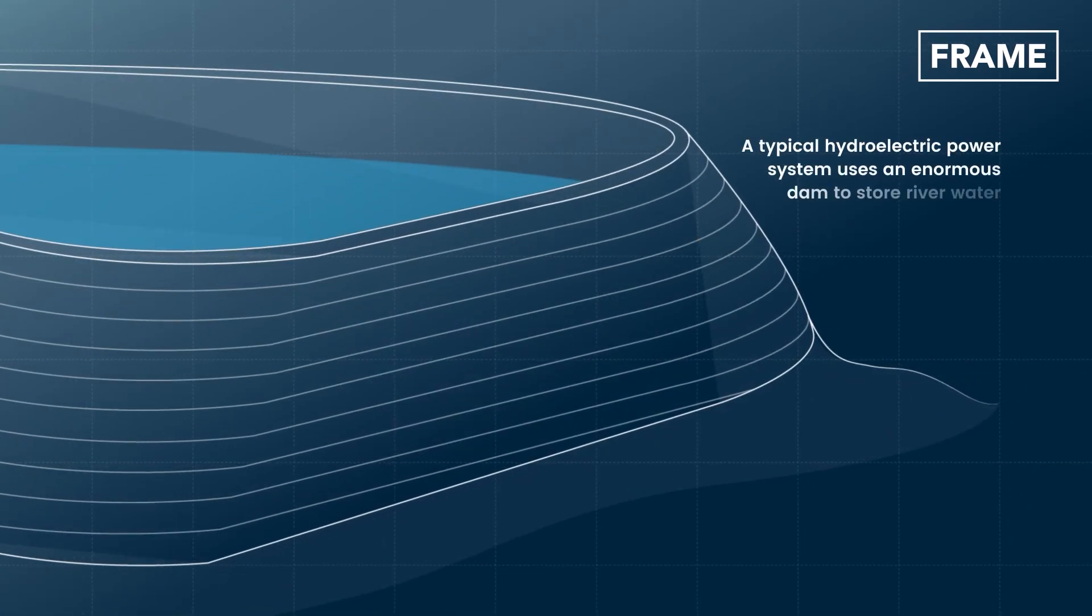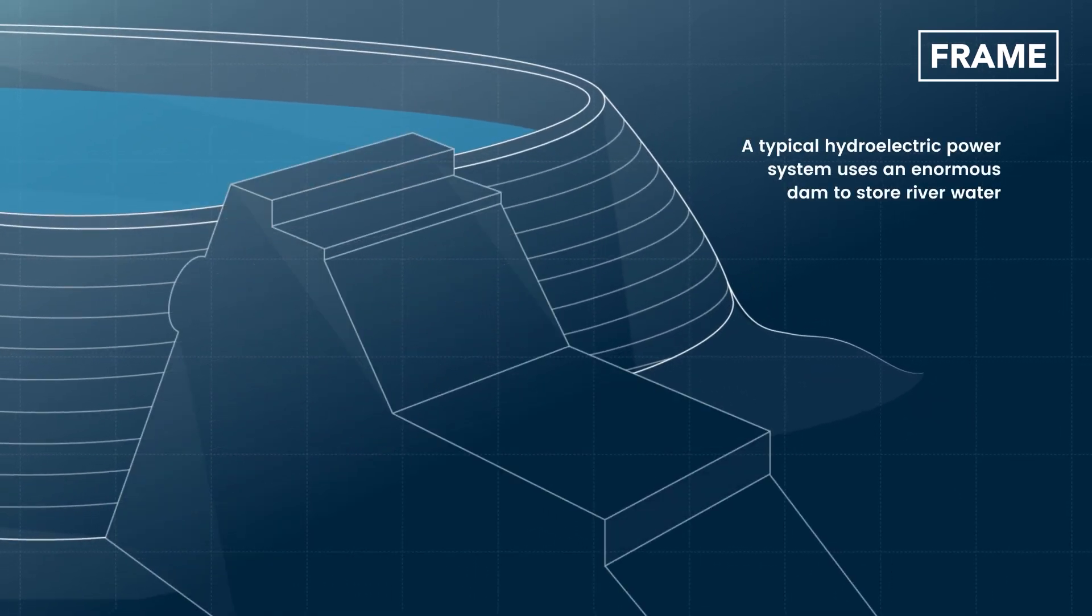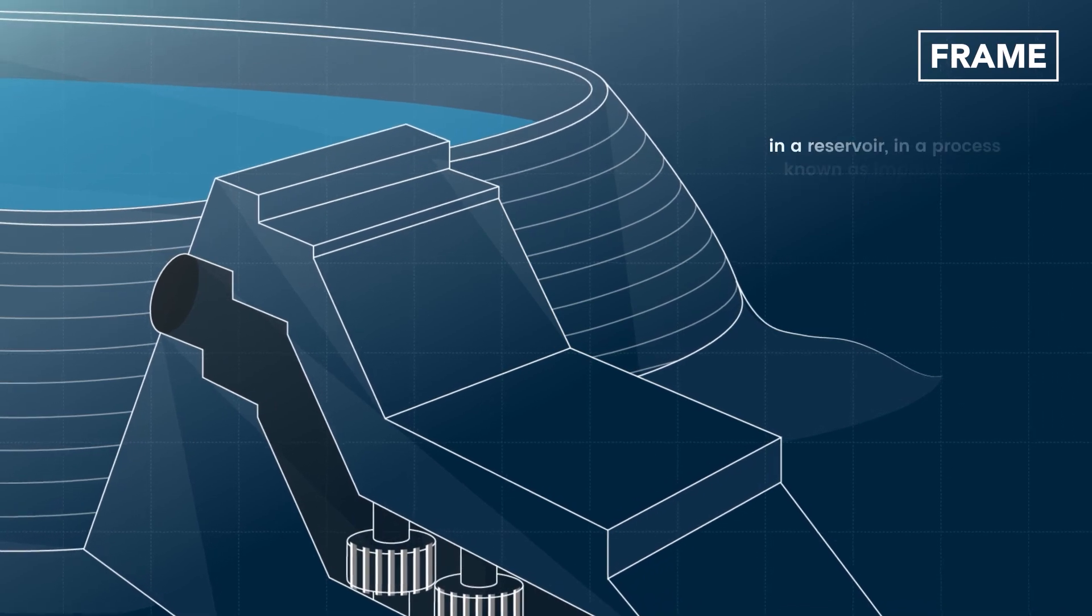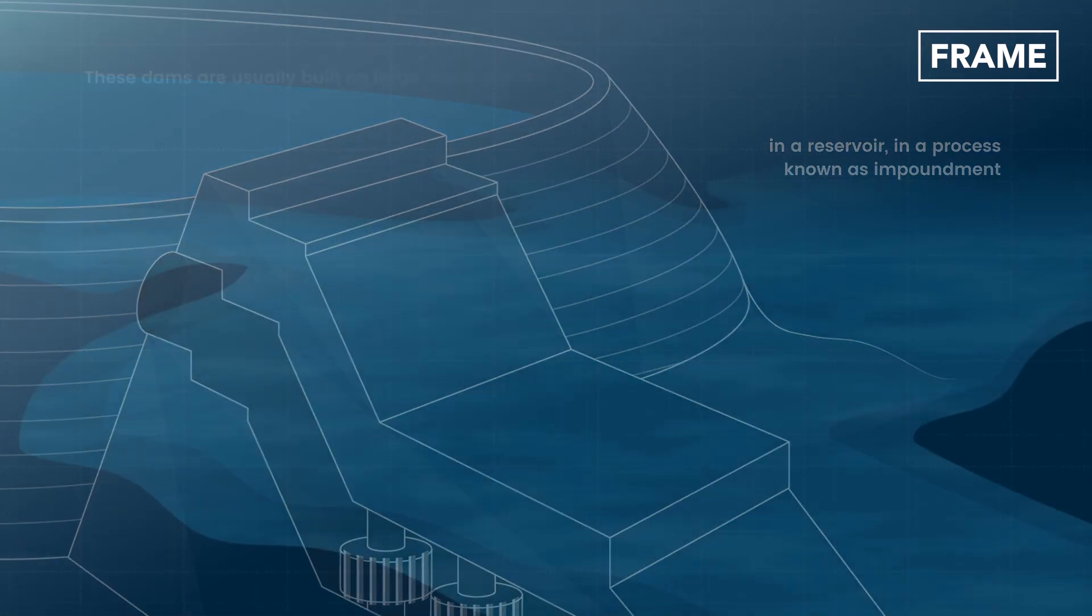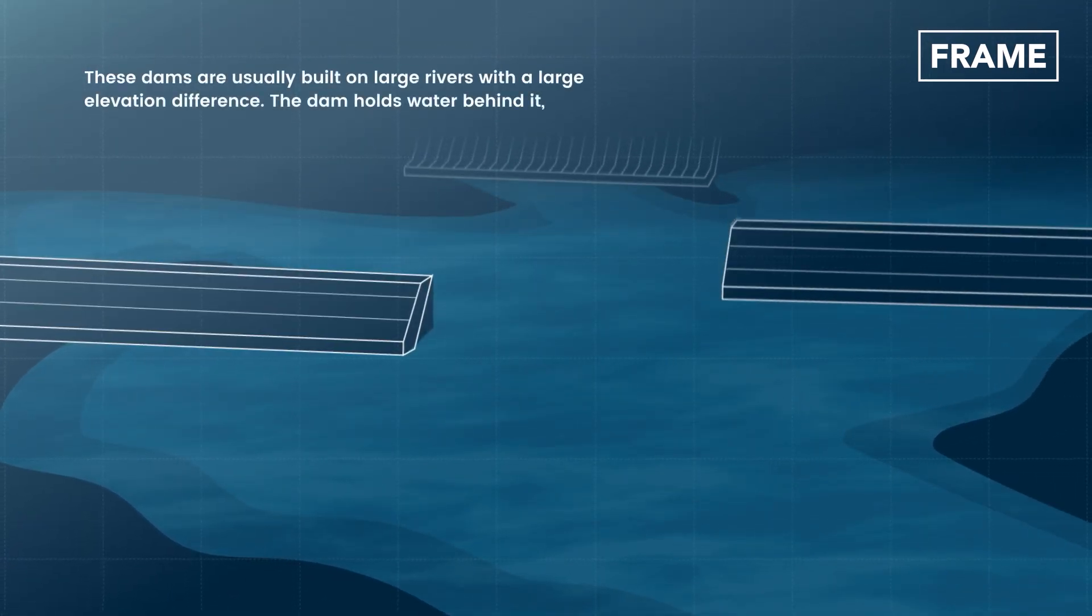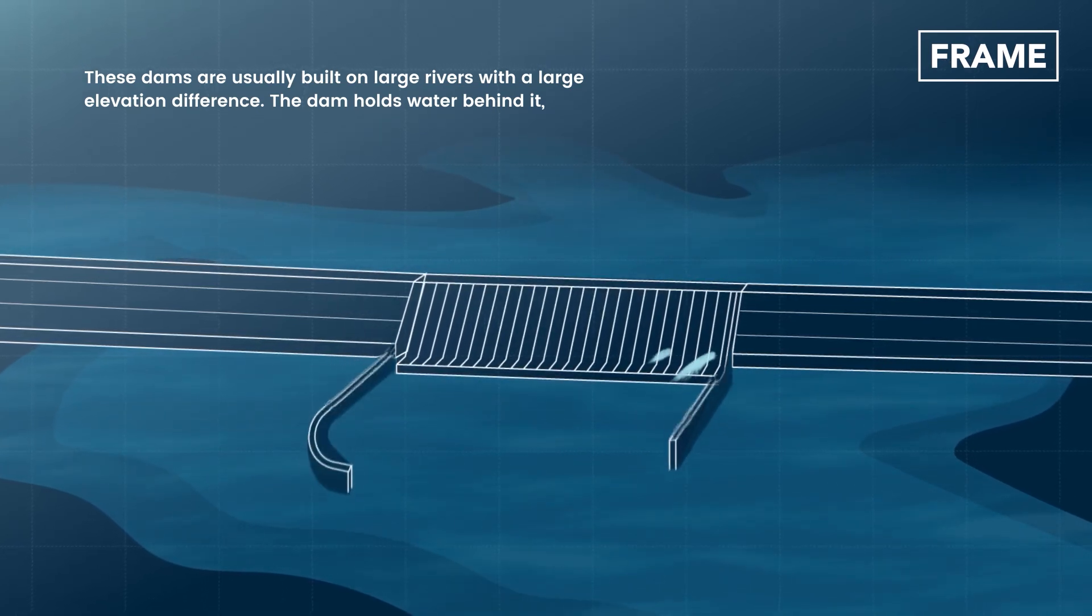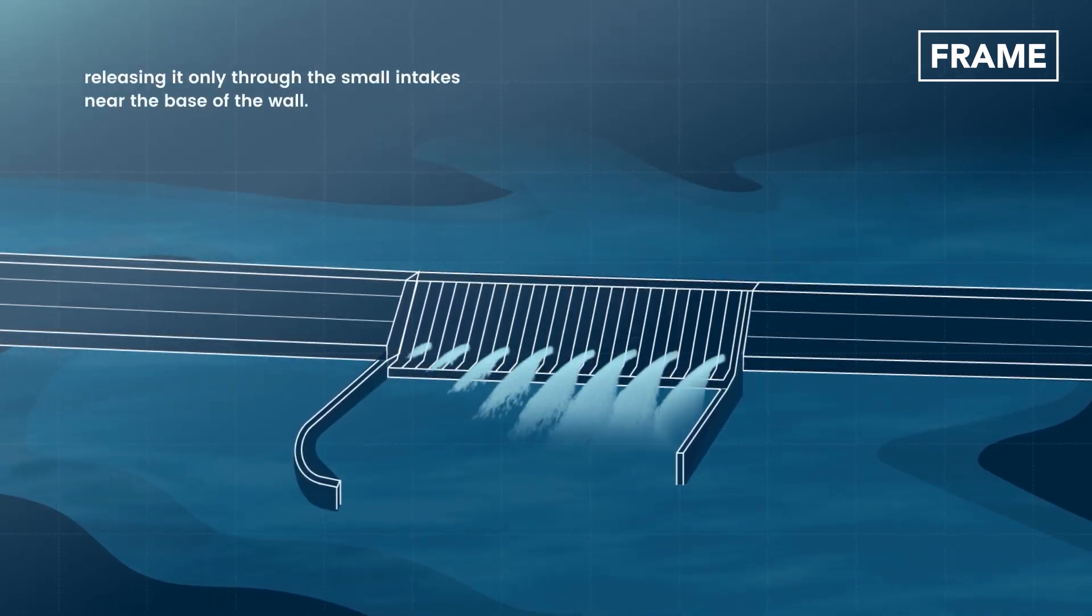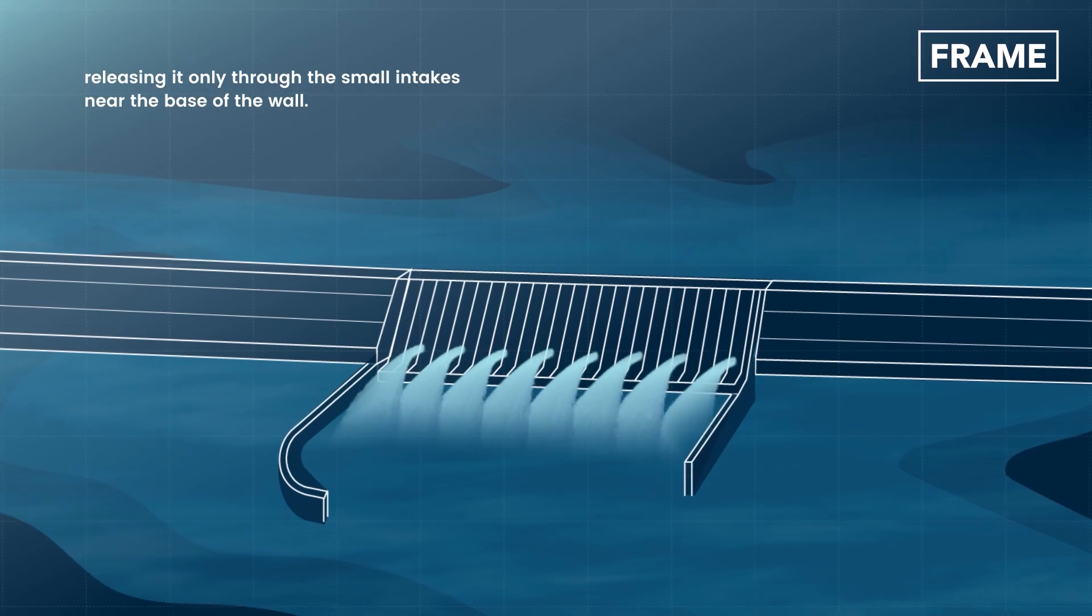A typical hydroelectric power system uses an enormous dam to store river water in a reservoir in a process known as impoundment. These dams are usually built on large rivers with a large elevation difference. The dam holds water behind it, releasing it only through the small intakes near the base of the wall.